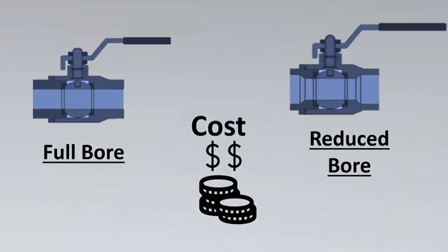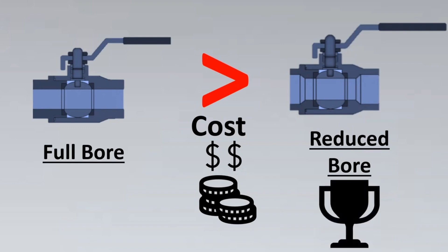The next criteria is one of the most important — not just in engineering projects but throughout the industry — which is cost. The primary reason for going with a reduced bore valve is cost. Full bore valves cost more than reduced bore because they require more material, since the bore must be exactly equal to the line size. So if cost is the main consideration, reduced bore has the upper hand and is the winner.